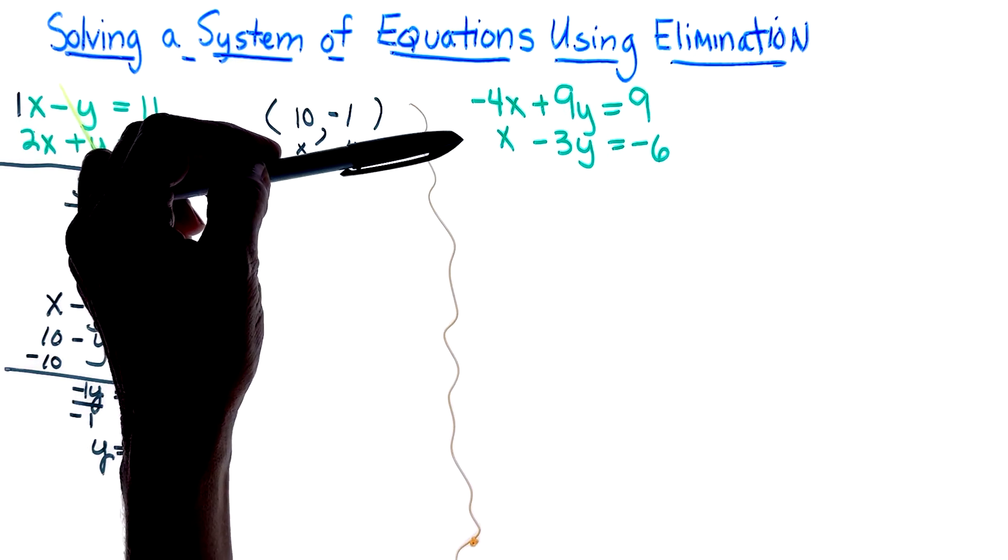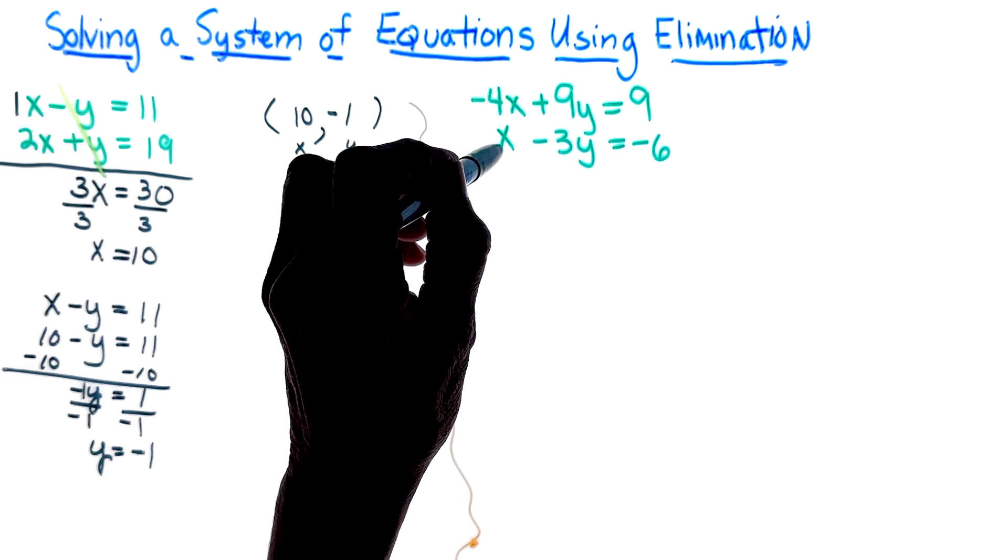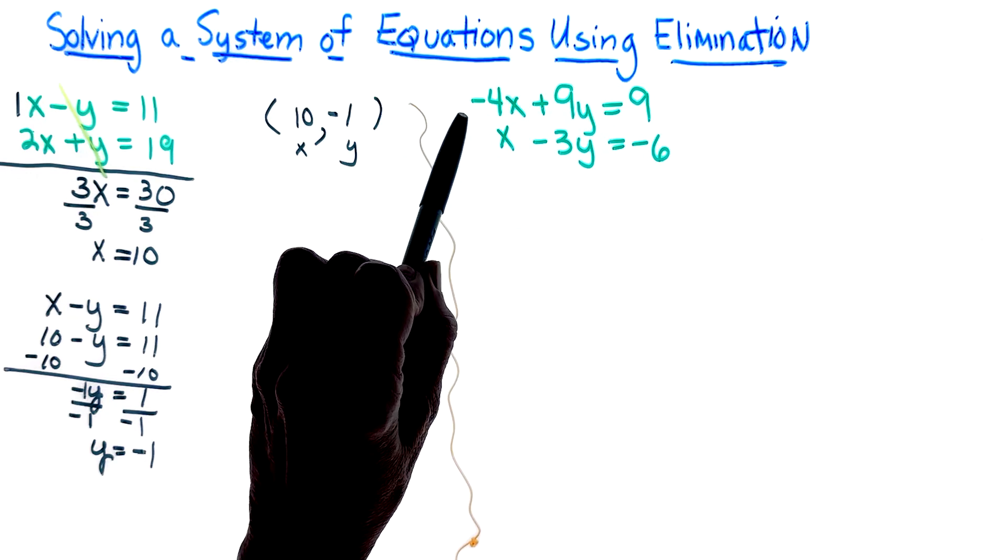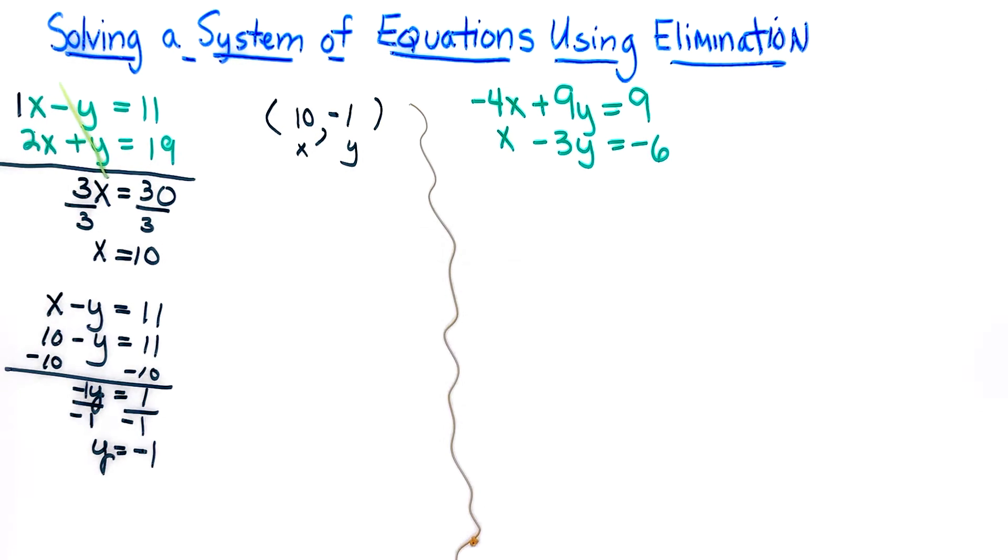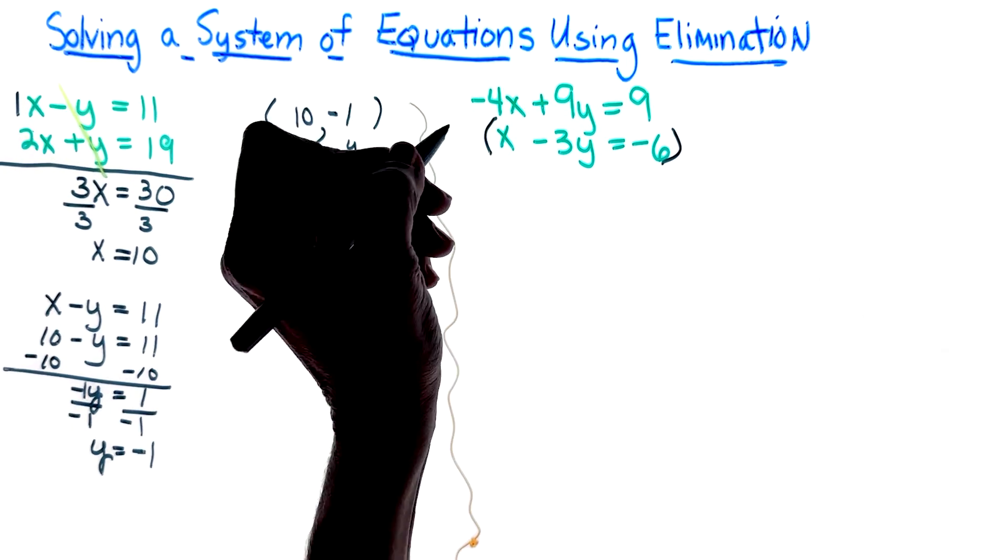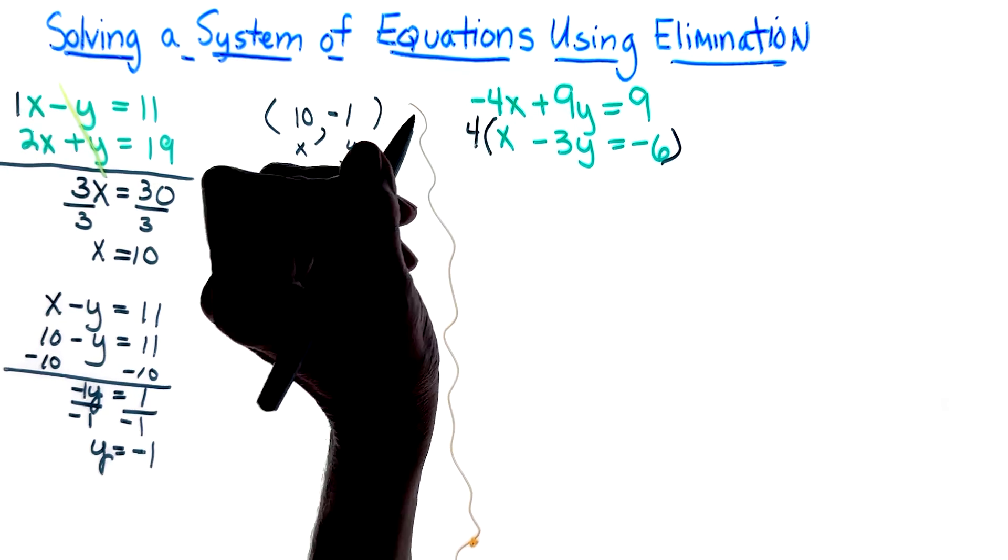I could multiply this equation by just a 4 and I would get 4x. And here, remember this is negative 4x, so I am going to choose to do that. I could have gotten rid of the y by multiplying by 3, but I'm deciding to get rid of the x.